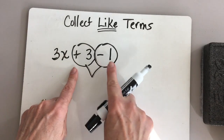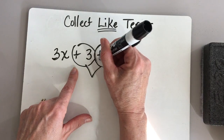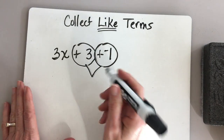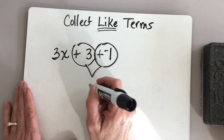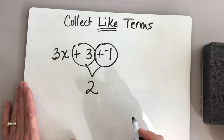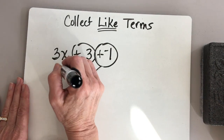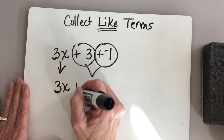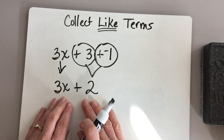Plus 3 minus 1 — or again, if you wanted to change that to addition and the next number to its opposite, it's going to be the same answer. 3 minus 1 would be 2. 3 plus a negative 1 is going to be a 2, a positive 2. And then we can't forget about that 3x: the result is 3x plus 2.